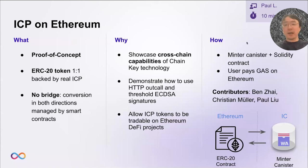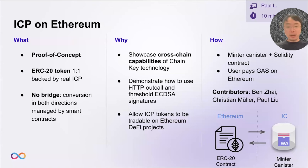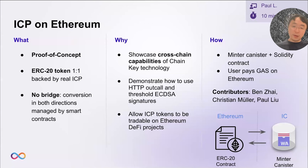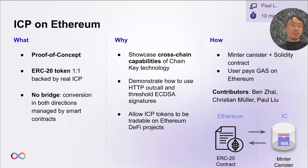We have a canister on the IC side and a smart contract on the Ethereum side, showing how they can communicate with each other and how information can flow from one to the other. Although built in a short time, it's built upon very powerful technologies on the IC, like HTTP outcall and threshold ECDSA signatures. Hopefully, once this goes out of the proof-of-concept stage, we can see more usage of this token in the Ethereum ecosystem, perhaps in DeFi projects like Uniswap.